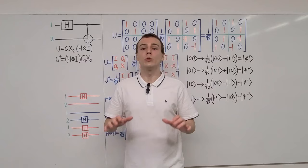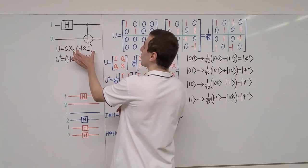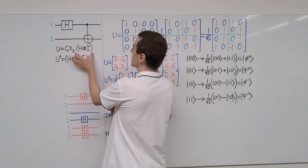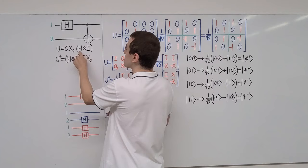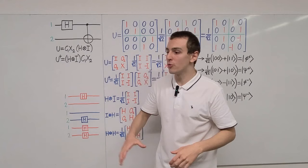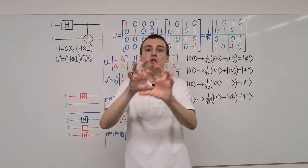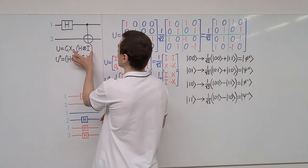We can construct orthonormal basis sets to describe any state in this four-dimensional Hilbert space. One very convenient orthonormal basis set is the two-qubit computational basis. All the matrix representations in this video are written in the two-qubit computational basis. We're constructing a two-qubit operator out of two single-qubit operators. H and I both have two-by-two matrix representations, so taking a two-by-two matrix tensor product with another two-by-two matrix will construct a four-by-four matrix.